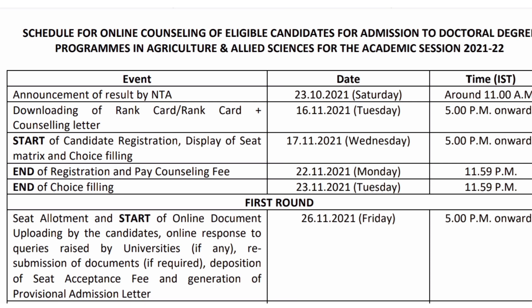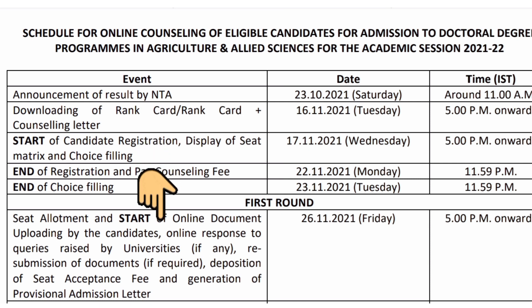For the first round, seat allotment and the start of online document uploading by the candidate will begin on 26th of November 2021 from 5 PM onwards. Every candidate should note that the first round allotment starts from 26th of November.